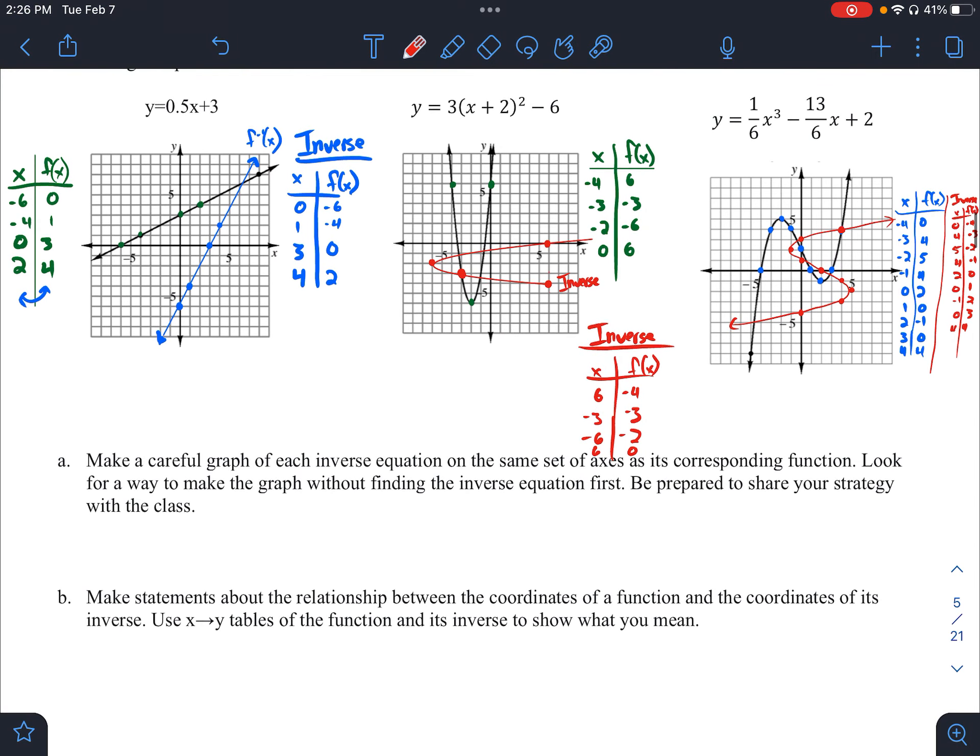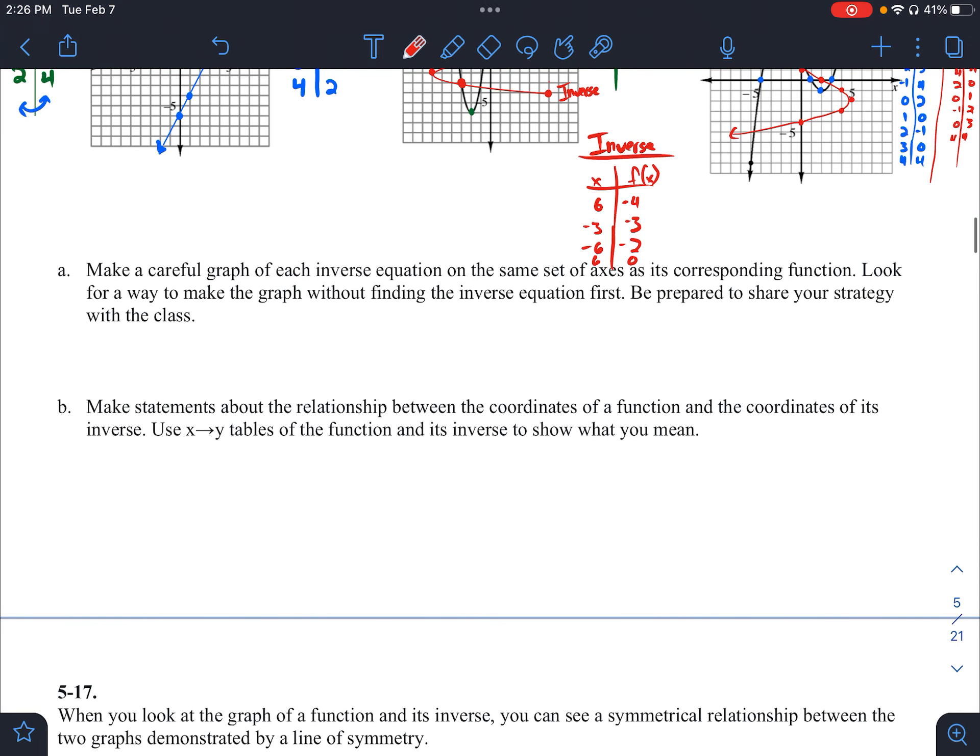So we just did letter A. We made the inverse for each of these. So letter B then says make statements about the relationships between the coordinates of a function and the coordinates of an inverse. Use x, y tables of the function and its inverse to show what you mean. So here we have our x and y values switch, which we already knew, right? In a table for a function and table for its inverse, that's just the switching we did.